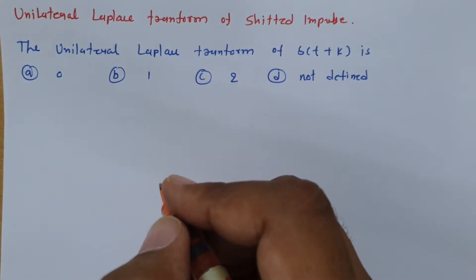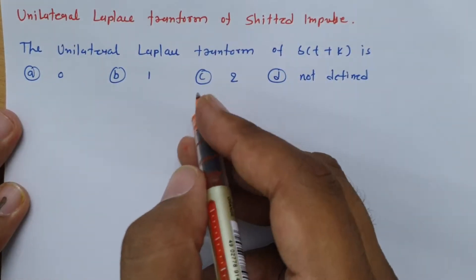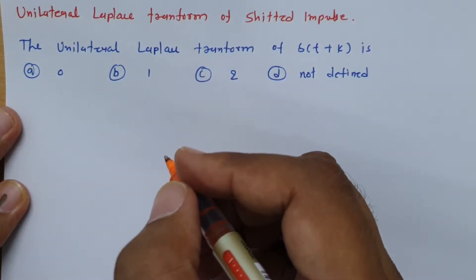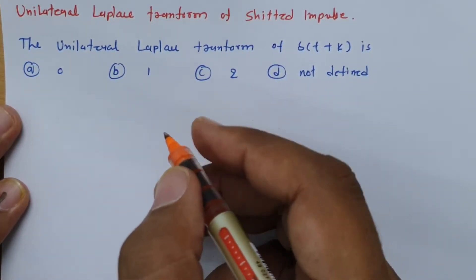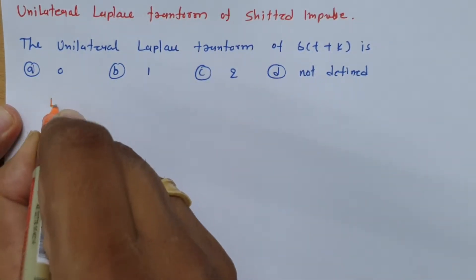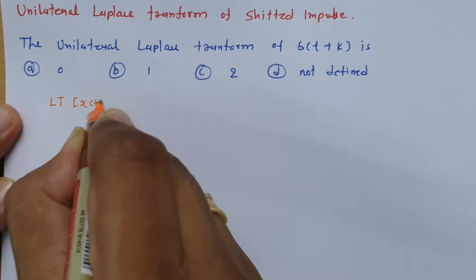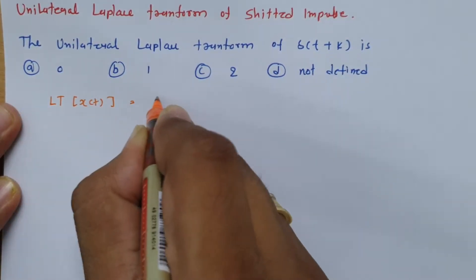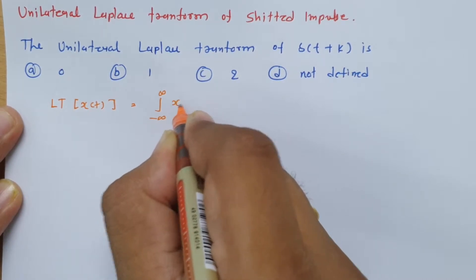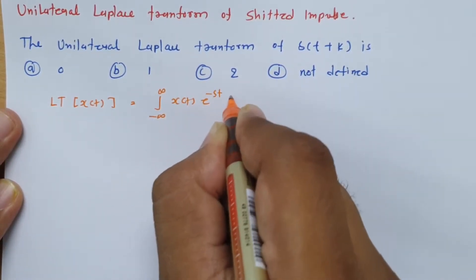First of all, we need to understand what the unilateral Laplace transform is and what the Laplace transform is — I have already explained this in my previous sessions, you can refer to those. The bilateral Laplace transform of x(t) is the integration from minus infinity to infinity of x(t) · e^(−st) dt.